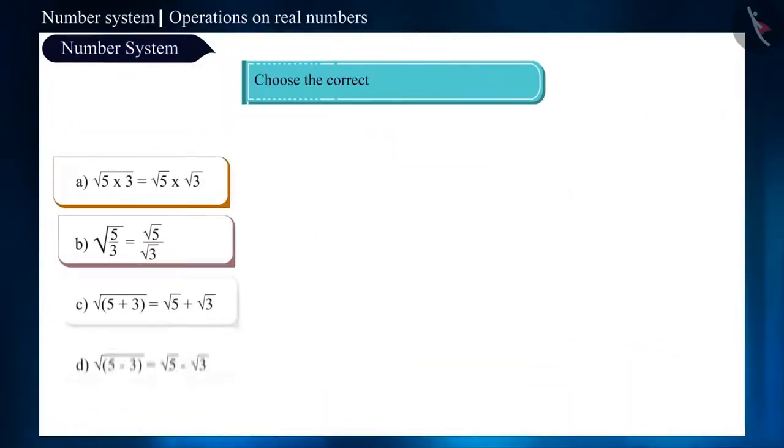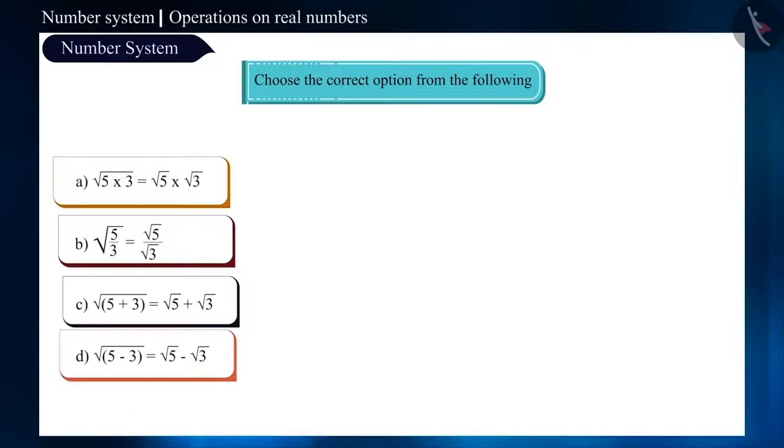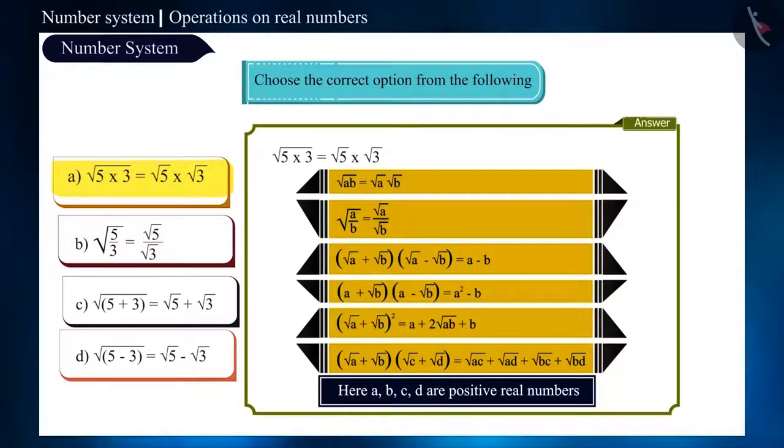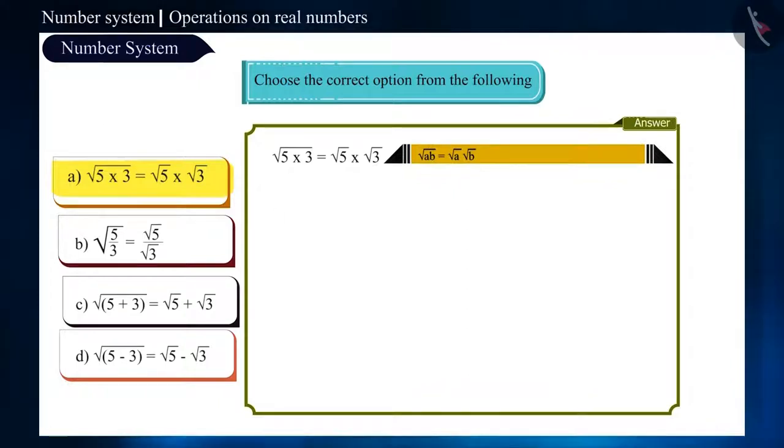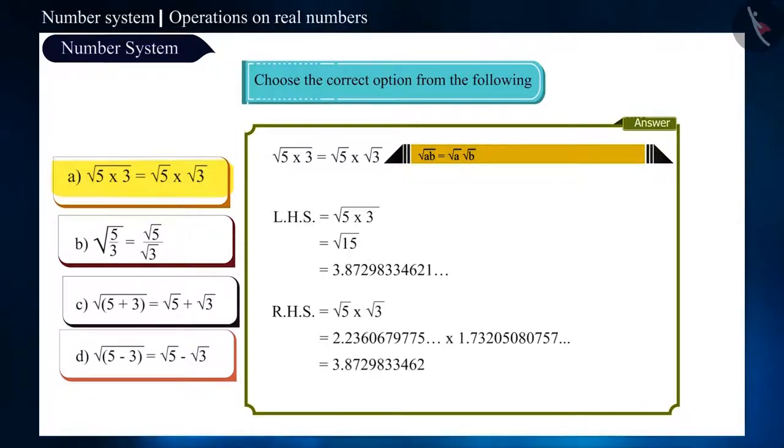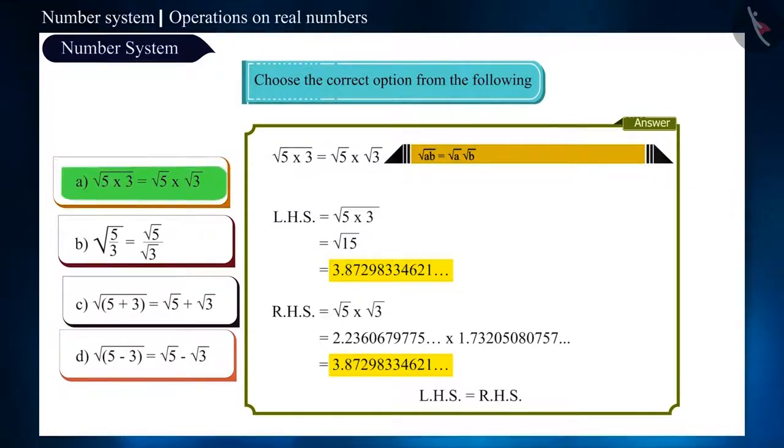Choose the correct option from the following. Friends, look at option A. Here, the rule root of A into B is equal to root of A into root of B has been used. Now, let's find their value and check. Here, the value of root of 15 is equal to root of 5 into root of 3. Therefore, this option is correct.